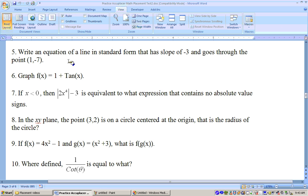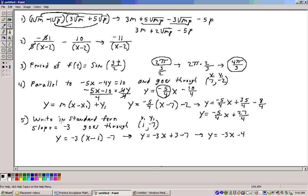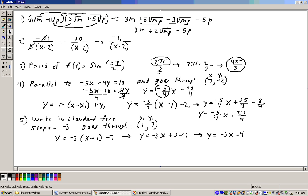Okay, problem number 5 says, write an equation of a line in standard form that has slope of negative 3 and goes through the point 1, negative 7. So let's go ahead and do that problem. Here we are at number 5, and it says standard form slope is negative 3 and goes through this point 1, negative 7. So I'm going to use this exact same point slope formula again. The slope is negative 3, so I get y equals negative 3 times x minus x1 is 1, plus y1, plus a negative 7 is minus 7.